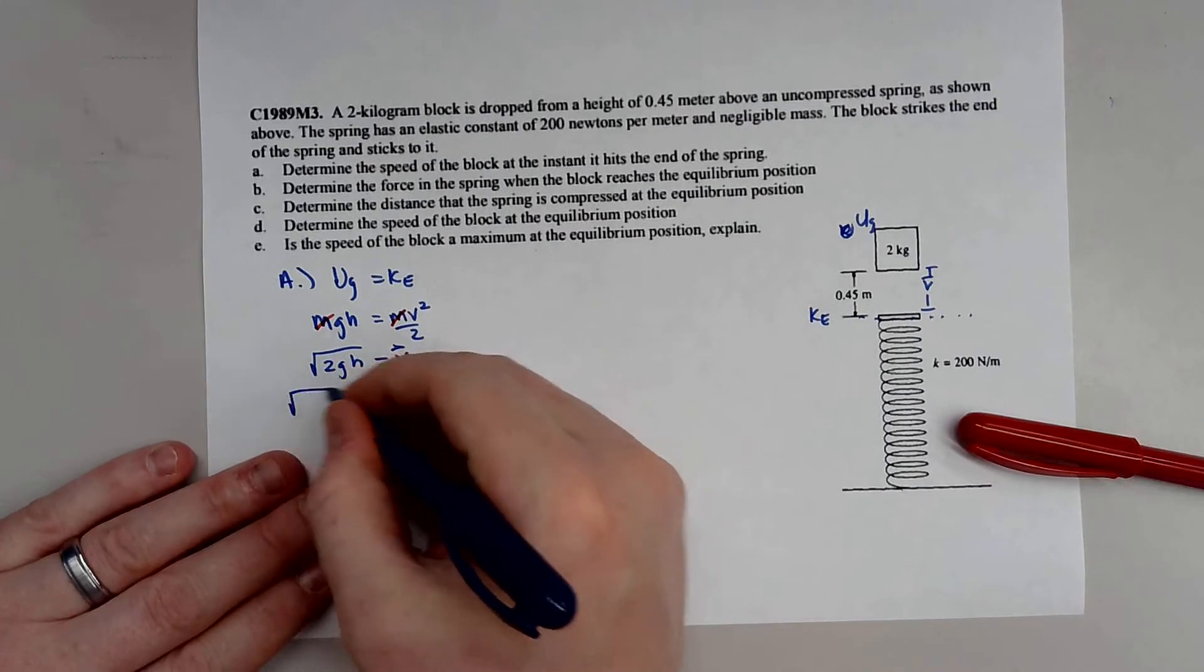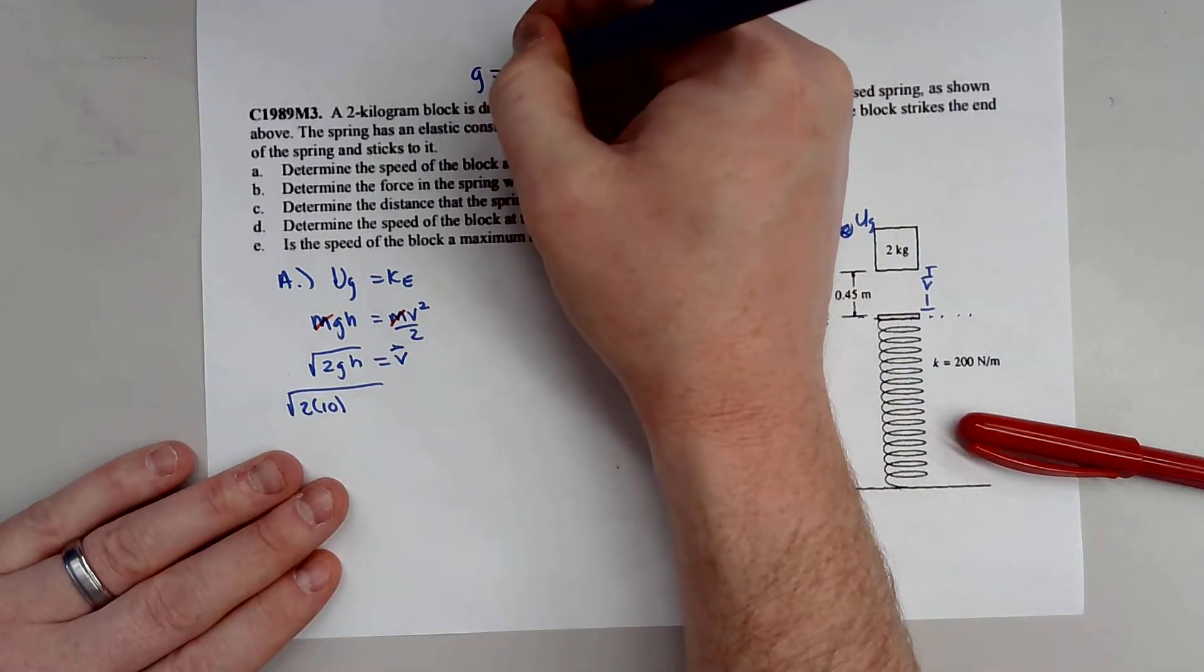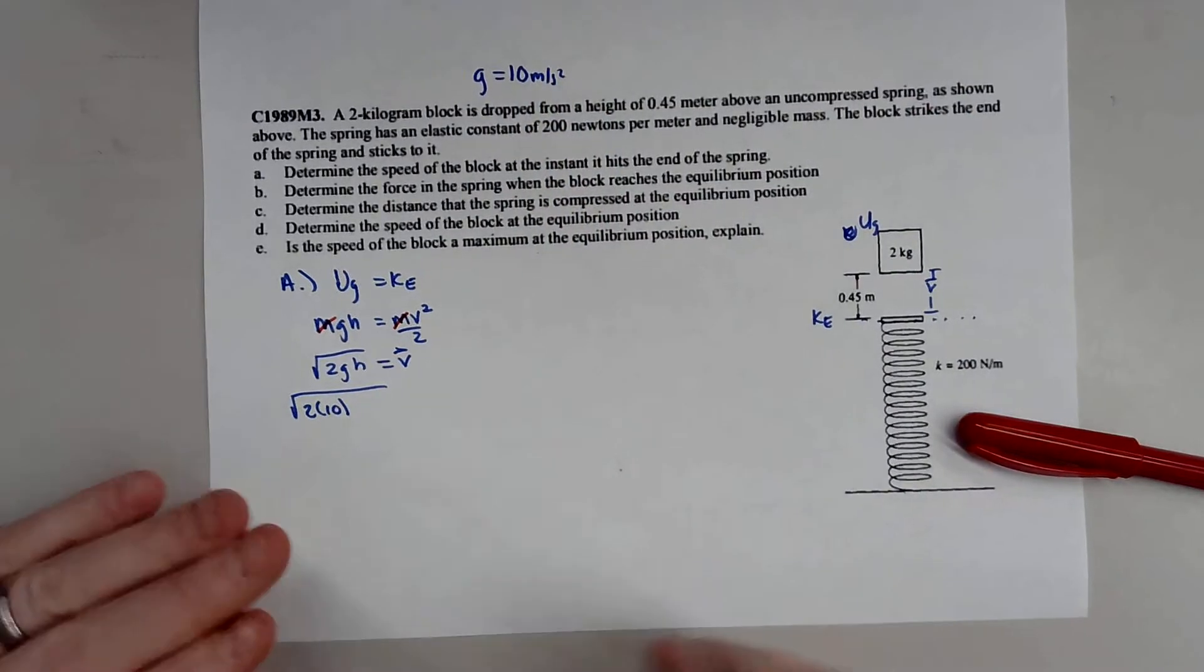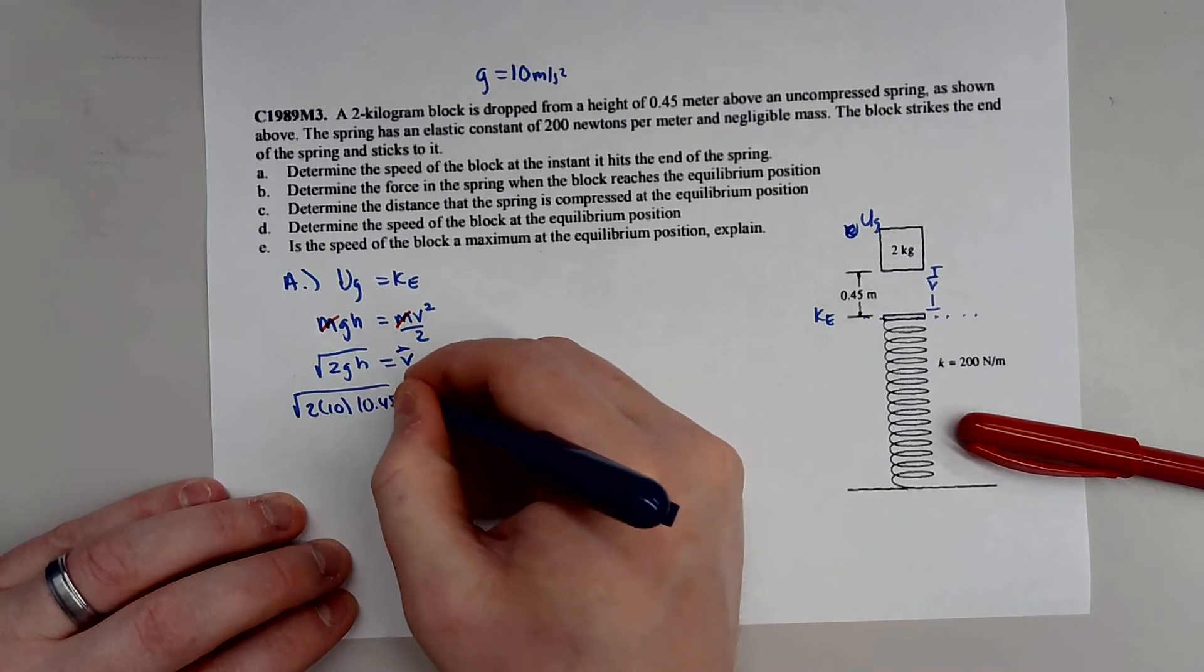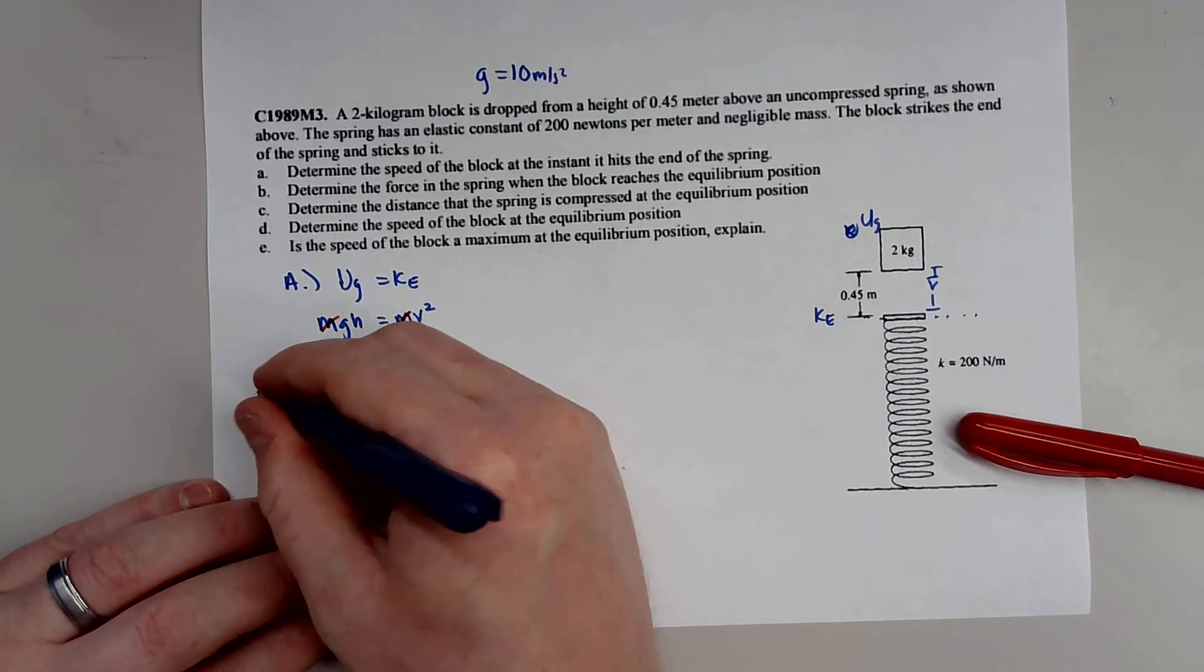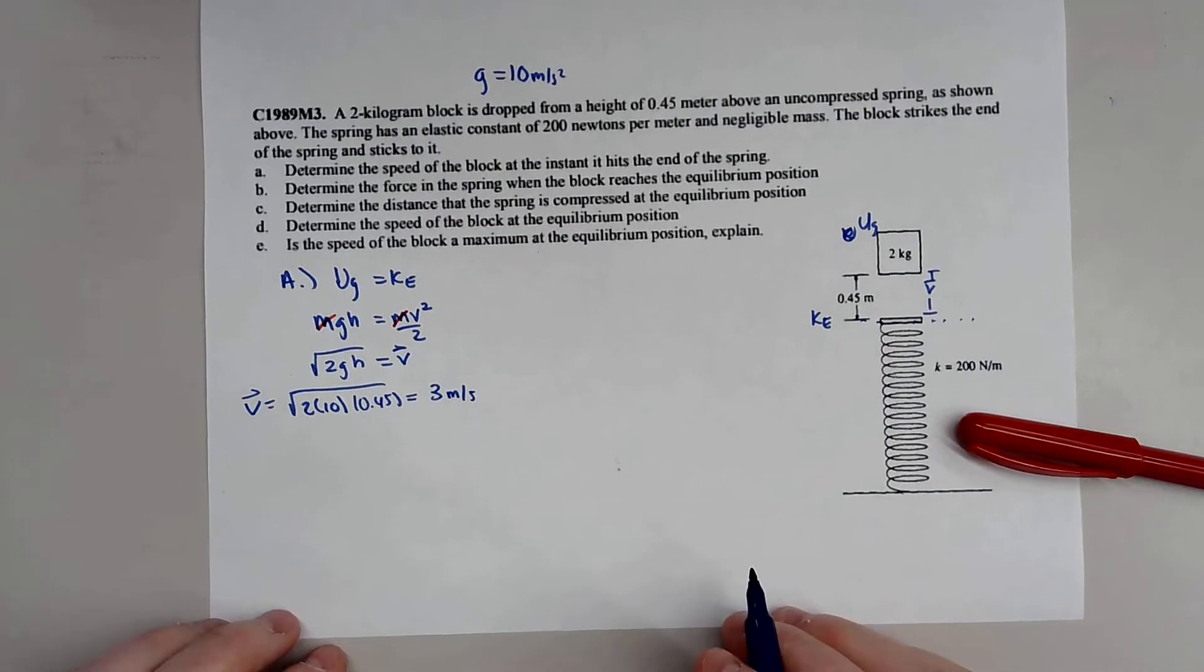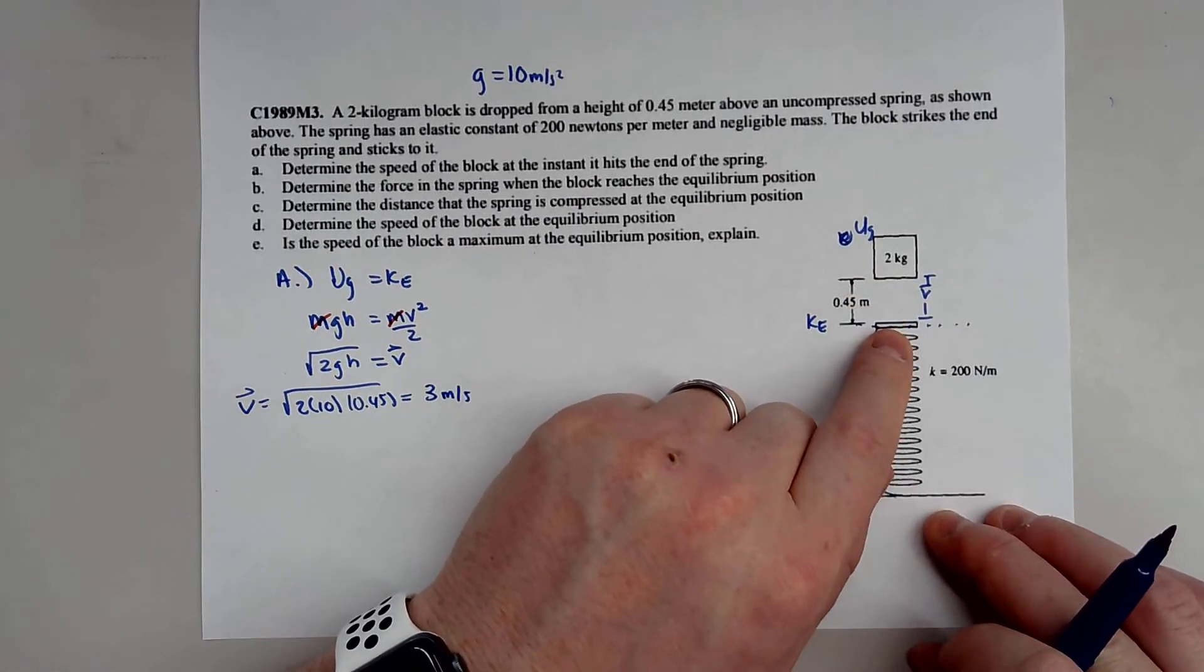And plugging in those numbers, you get 2 times 10. I'm going to use g as 10 meters per second squared. It makes calculations a little bit easier. And the height is 0.45. And that velocity is 3 meters per second. So when you type that into the calculator, you'll get 3 meters per second. That means this block is going 3 meters per second right before it hits this spring.